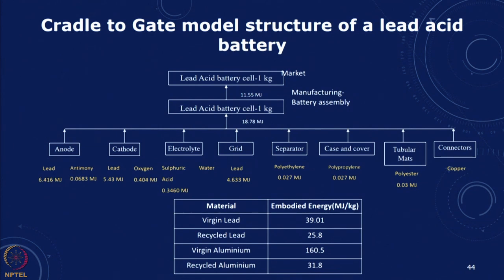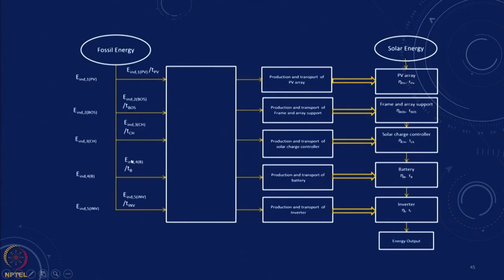These material fractions can be varied and the numbers will change accordingly. All components — separator, tubular mass, connectors, and battery assembly — are included. For the overall PV battery system, we account for manufacture and transport of the PV array, production and transport of the frame and array support, the solar charge controller, the battery, and the inverter. Based on this, for a particular output, we compile all the different steps in the life cycle analysis to get the total energy in the system.